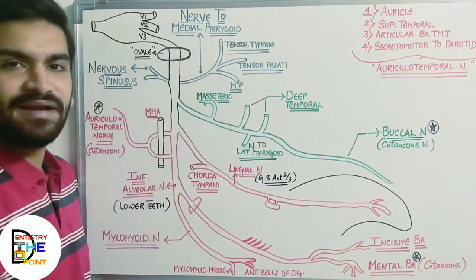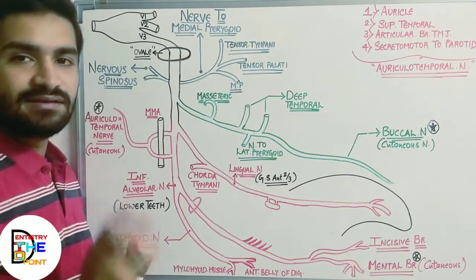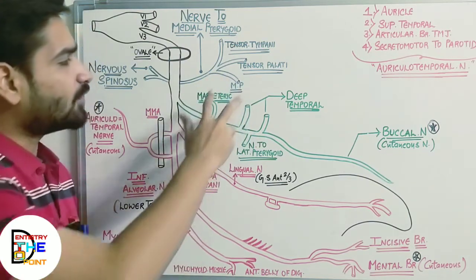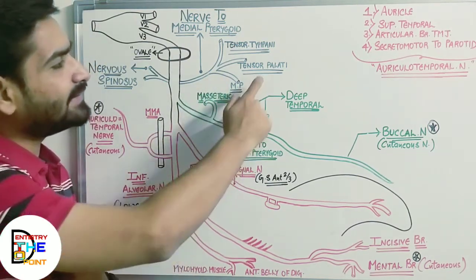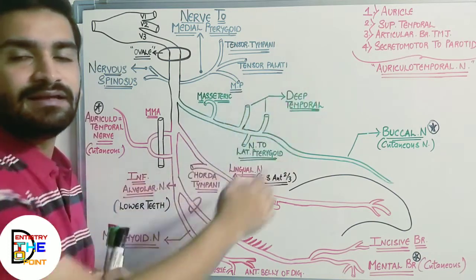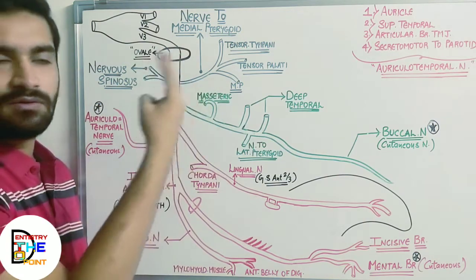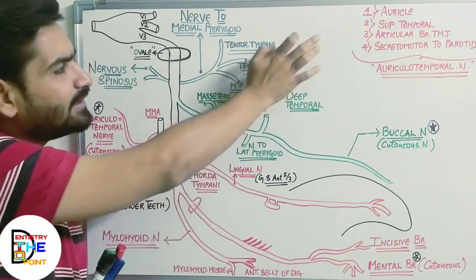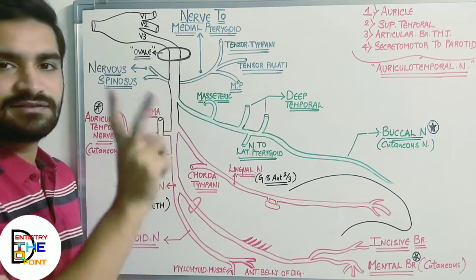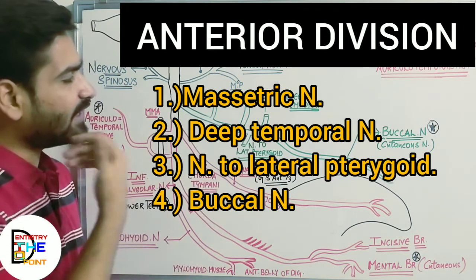The nerve to medial pterygoid, as the name suggests, supplies the medial pterygoid muscle. However, it also supplies two additional muscles: tensor palatine and tensor tympani. So the nerve to medial pterygoid supplies a total of three muscles — medial pterygoid, tensor palatine, and tensor tympani. Combined with the meningeal branch nervus spinosus, these are the two branches of the main trunk.